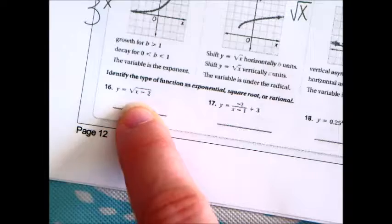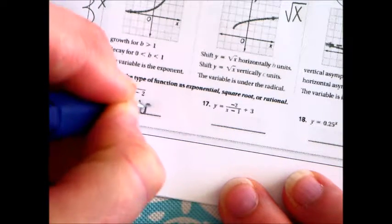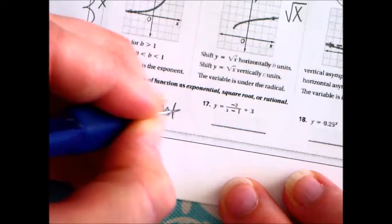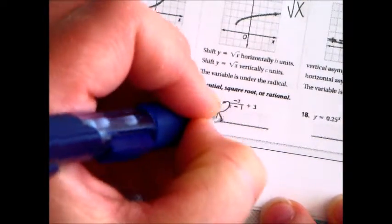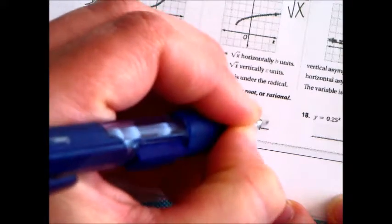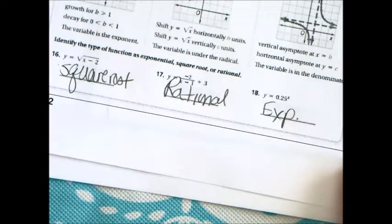And, let's talk about these ones down here. See how x is in the square root? That means this one would be a square root. See how x is on the bottom down here? That's rational. And, see how x is an exponent on this one? That makes it exponential. Not too terrible, is it?